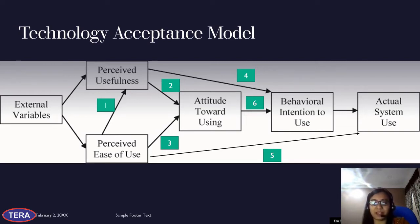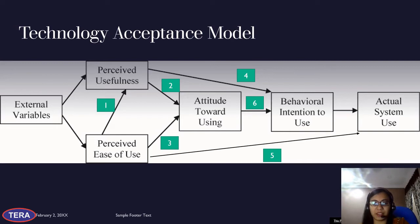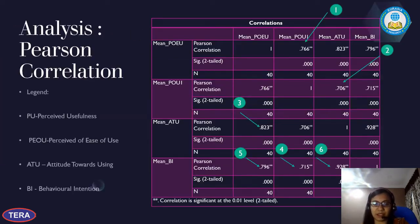When someone finds a technology useful and easy to use, they develop a positive attitude toward it. This attitude influences their behavioral intention to use the technology in the future. The numbering I have placed here corresponds to each of the six hypotheses. For example, the first hypothesis examines whether perceived ease of use directly influences perceived usefulness. The same logic applies to hypotheses two through six. Using Pearson correlation analysis, each hypothesis is tested.